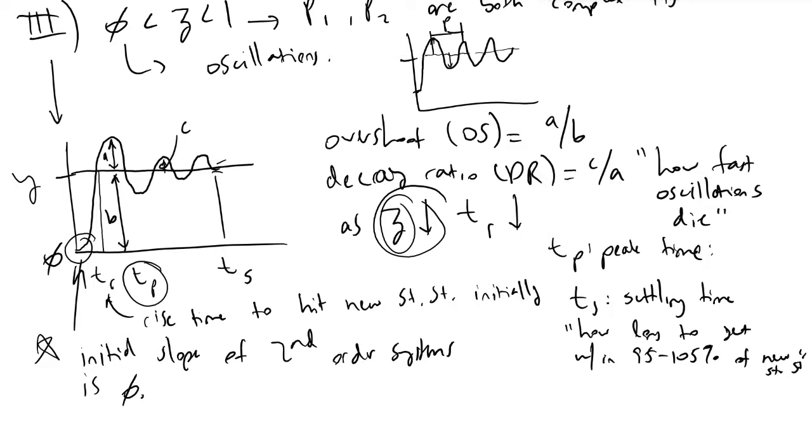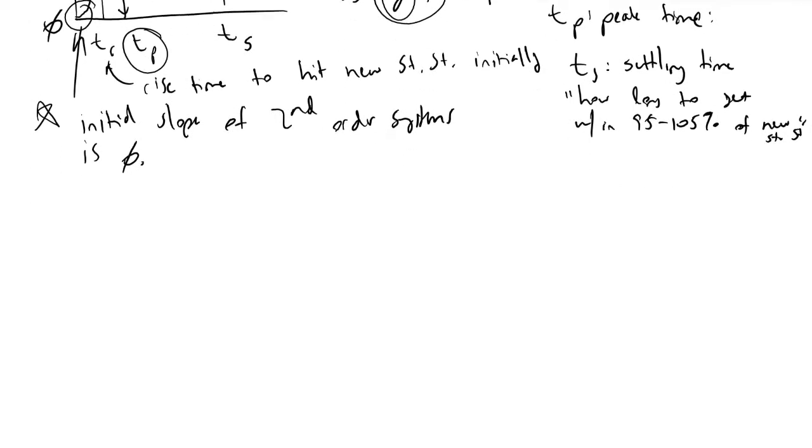To add on to this, you can look up in textbooks the relationships between the overshoot as well as the decay ratio and zeta. We can find that they are all functions of each other as well as tau, the time constant. These are all tabulated equations we can look up quite readily.